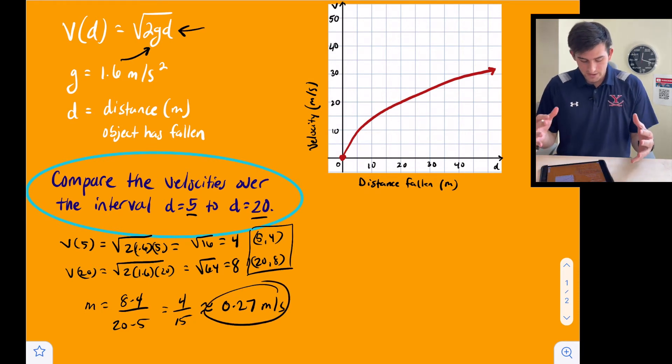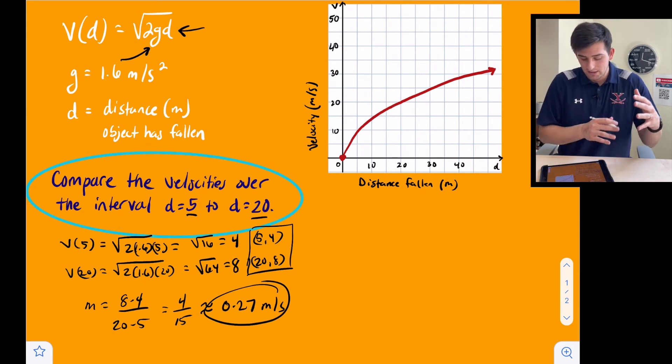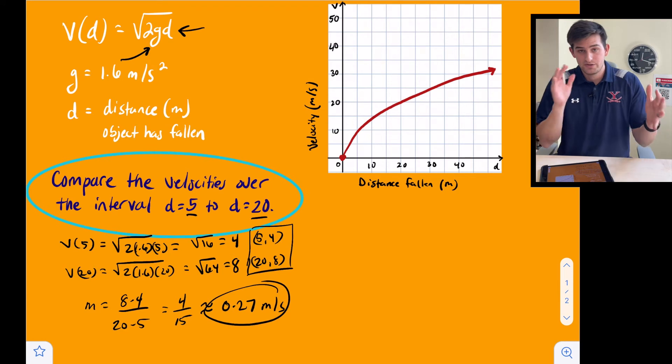So now we know the velocity of the object on the moon is 0.27 meters per second between the distance of 5 meters to 20 meters.